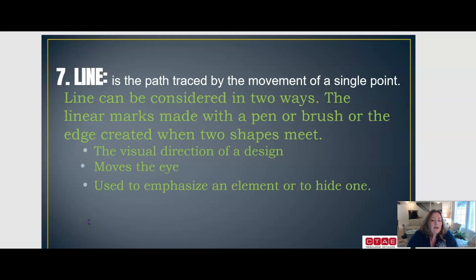Finally, our seventh element of design is line, which is the path traced by the movement of a single point. Line can be considered in two ways: the linear marks made with a pen or brush, or the edge created when two shapes meet. There is a visual direction of design. It moves your eye and is used to emphasize an element or to hide one.